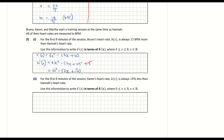Part f2: Karen's heart rate K of x is always 10% less than Hannah's for the first 8 minutes. I need K dash of x. Ten percent less means it is 90% of Hannah's. Ninety percent as a decimal is 0.9. So K dash of x equals 0.9 times h dash of x, which is 0.9 times the quantity 6x squared minus 57x plus 105.